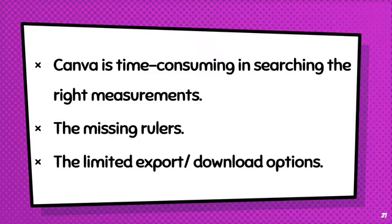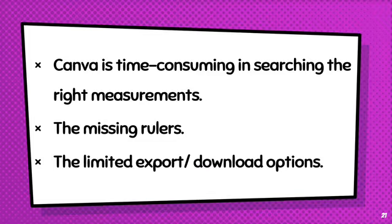The last drawback is the limited export and download options. Canva only consists of the main file types such as PNG, JPG, and PDF. Lately they expanded their file options with a format called PDF Print; however, this setting is still not using the CMYK format, which departments for packaging design and magazine designs depend on. Moreover, Canva uses very low file sizes that may add to the risk of pixelation.